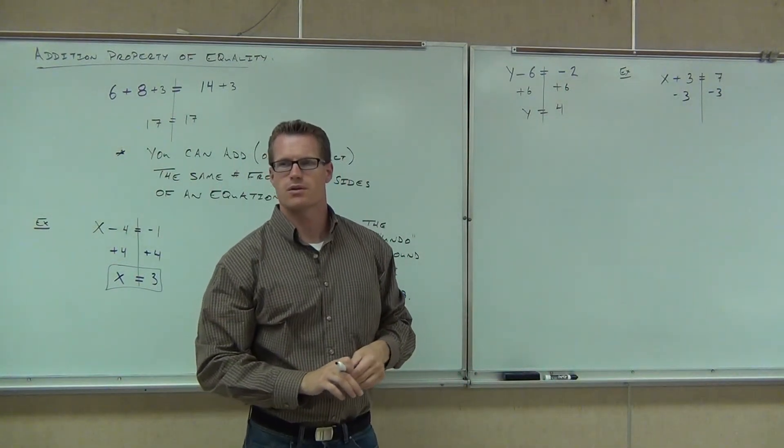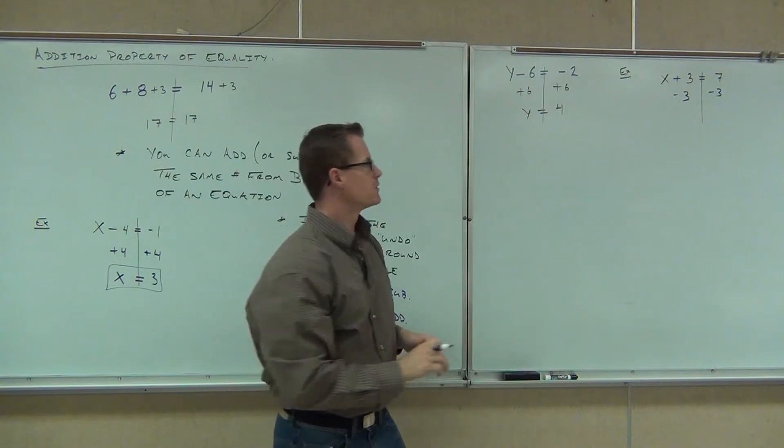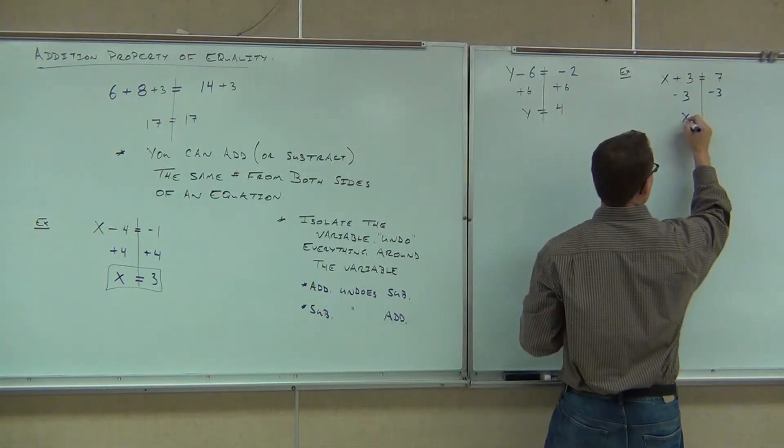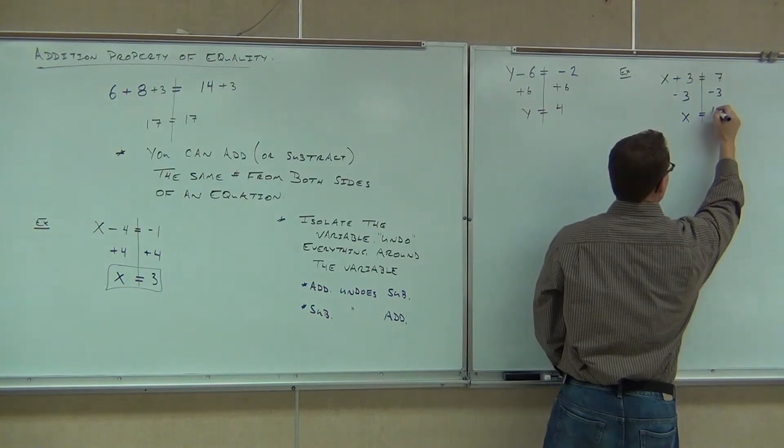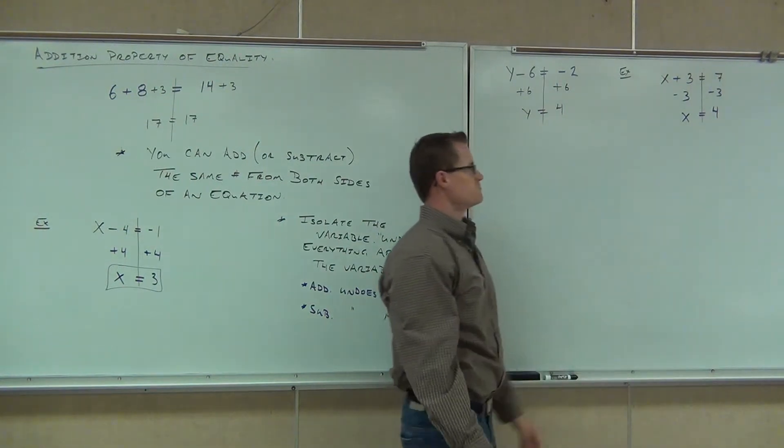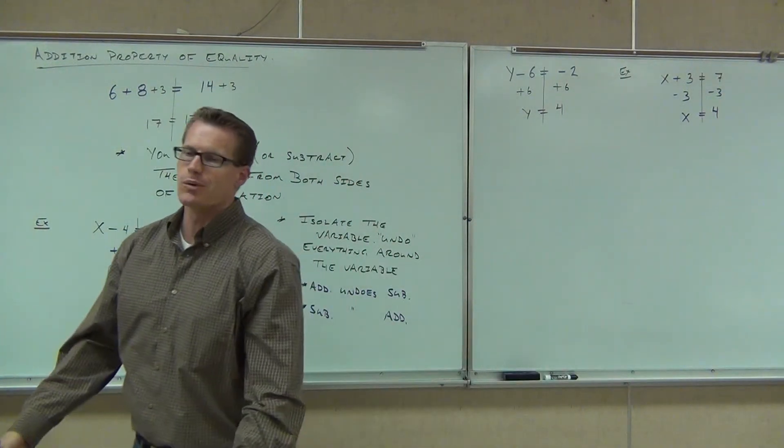What's going to be on the left-hand side of our equation? X. On the right-hand side? Four. Still checking work. Four plus three is seven. We know we got that one right.